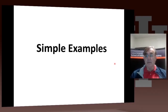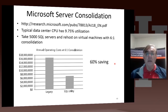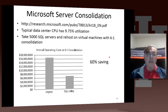Now we come to some simple examples showing commercially how clouds are used. The first of this graph comes from Microsoft, a little online report I discovered. It points out that a typical data center is only — each CPU is only used 10% of the time.